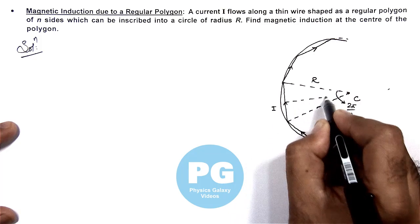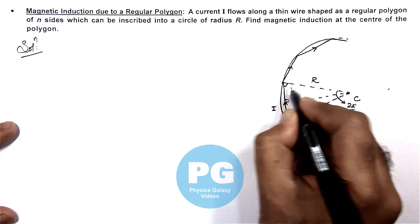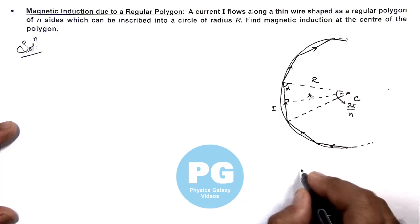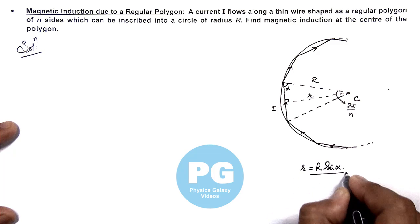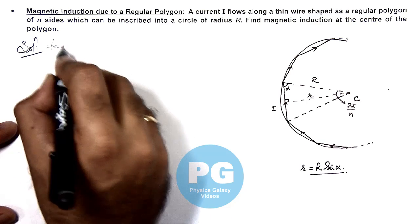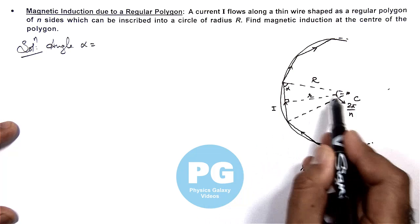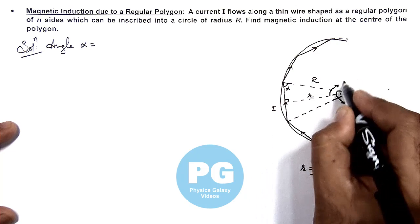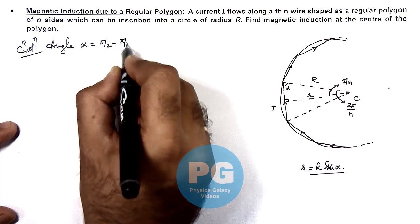If we drop a perpendicular from the center to this wire, and we consider this angle is alpha and this distance is r, then r can be given as capital R times sine alpha. The half angle of 2π/n is π/n, so the value of alpha is π/2 minus π/n.